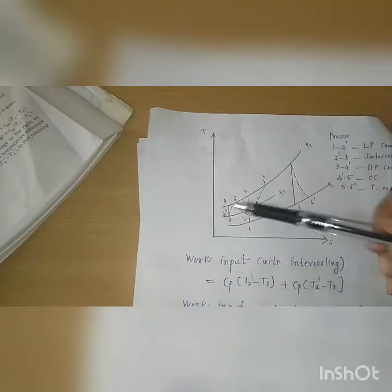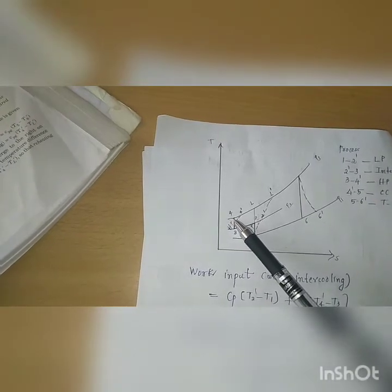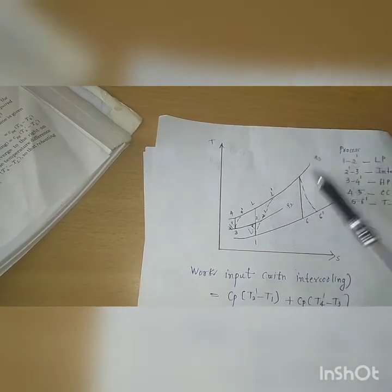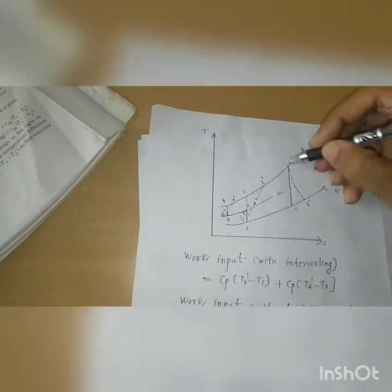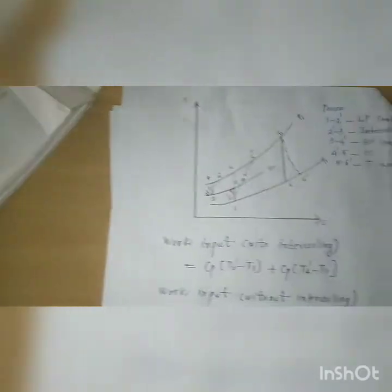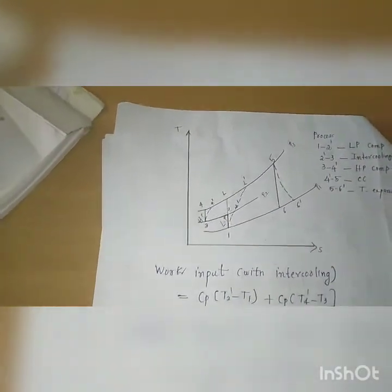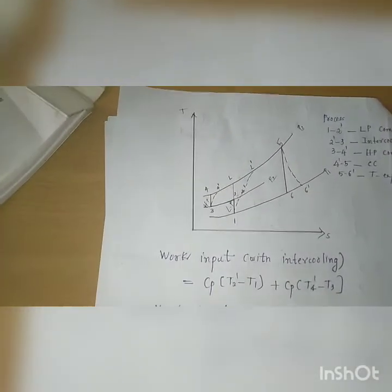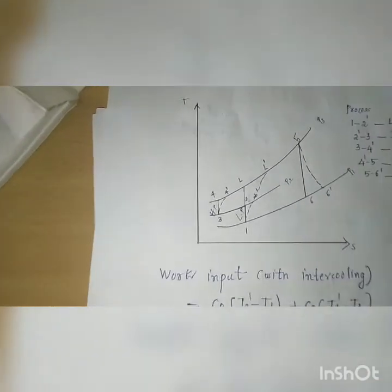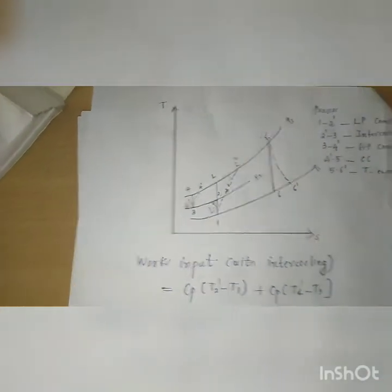Then the temperature increases from 3 to 4. In the ideal case, we are adding heat from 4 to 5 — that is, heat addition — and from 5 to 6 it is expanding in the turbine. Here we are doing the compression process in two stages: a low pressure compressor and a high pressure compressor.